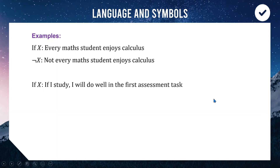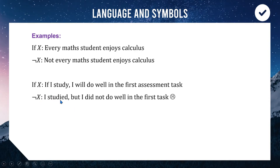Here's another example: X is 'if I study, I will do well in the first assessment task.' When negating a two-part implication statement, the first half remains unchanged and the second half is reversed. So the negation of X is: 'I study but I do not do well in the first assessment task.' The first half stays the same; the second half is negated.